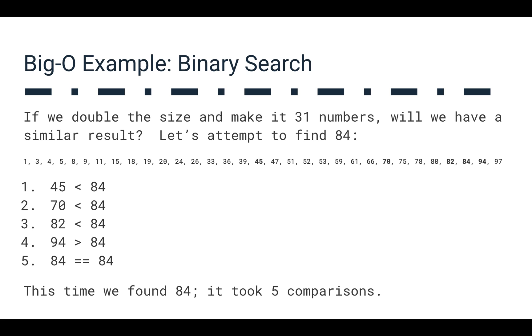Now, if we try this on a larger set of data, we can see that this is still going to hold up. If we take a look at 31 numbers here, so we have a list of 31 numbers: 1, 3, 4, 5, 8, 9, 11, 15, 18, 19, 20, 24, 26, 33, 39, 45, 47, so on.